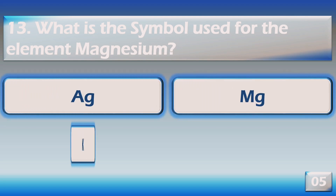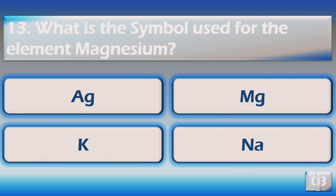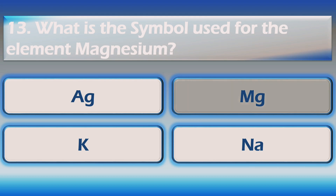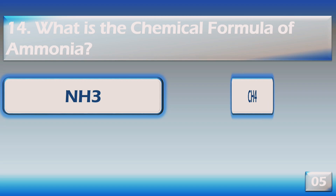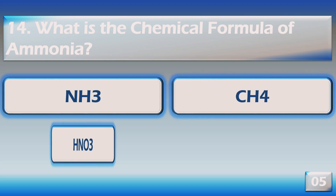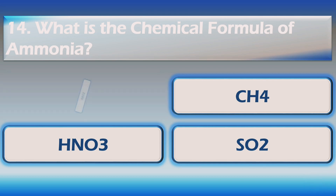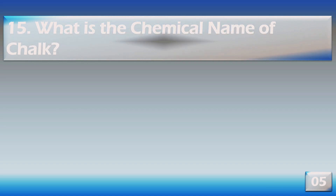The chemical name for common salt is sodium chloride. What is the symbol used for the element magnesium? The right answer is Mg. What is the chemical formula of ammonia? The right answer is NH3.